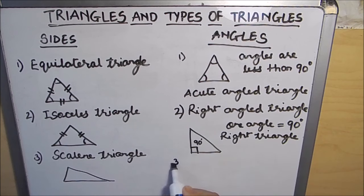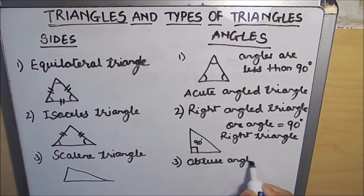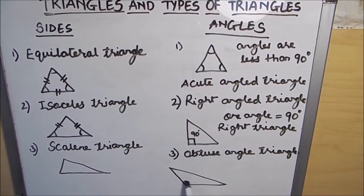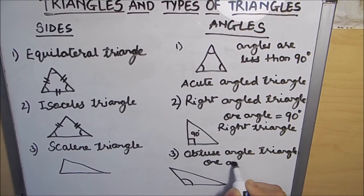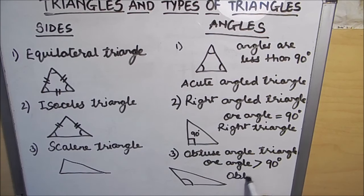The third category is the obtuse angled triangle. If one of the angles of a triangle is greater than 90 degrees, then it is called an obtuse angled triangle.